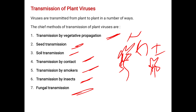In soil transmission, we must check whether the previously planted crop was disease-free or affected. If affected by disease, spores remain in the soil, germinate again, and form infection in the growing plant. In transmission by contact, if we touch an infected plant and directly touch a normal plant, the spores transfer to our hands and then to the normal plant, causing infection.